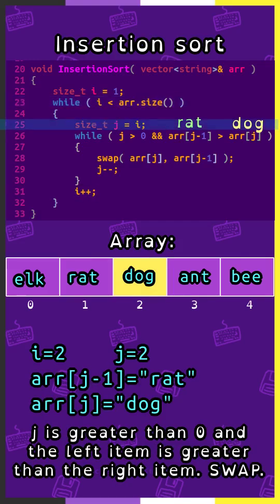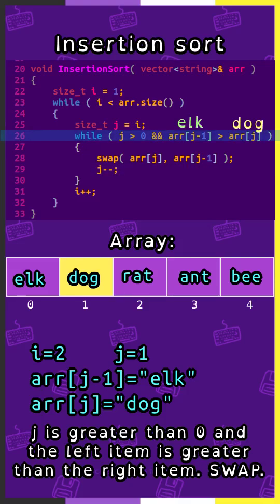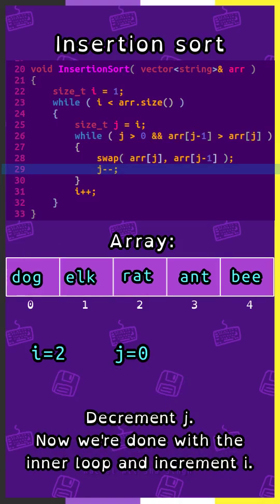j now starts at 2. Array sub j minus 1 is rat, array sub j is dog. j is greater than 0, and the left item is greater than the right item, so we swap. Decrement j. j is 1. Array sub j minus 1 is elk, array sub j is dog. j is greater than 0, and the left item is greater than the right item. Swap. Decrement j. Now we're done with the inner loop, and we increment i.